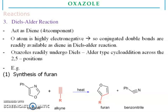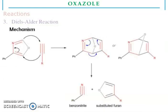Diels-Alder reactions: oxazole acts as a diene for bile components. The oxygen atom is highly electronegative, so conjugated double bonds are readily available as a diene in Diels-Alder reactions. Oxazole readily undergoes Diels-Alder type cycloaddition across the 2,5-positions. You can see the synthesis of furans — oxazole reacts with alkyne and it gives substituted furans and benzonitrile. This is the mechanism showing how it forms the adduct and then benzonitrile and substituted furan.